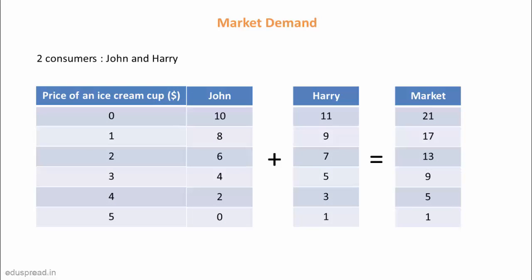Column 2 shows the quantity demanded by John at different prices, and column 3 shows the quantity demanded by Harry at different prices. Given this information, it is quite simple to obtain the market demand schedule. We just need to add the quantity of ice cream cups demanded by John and Harry at different prices. As you can see in column 4, the entire market demands 21 cups of ice cream when the price is $0, and it decreases to 17 cups when the price rises to $1, and so on.